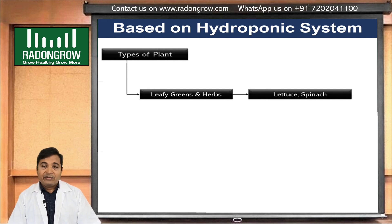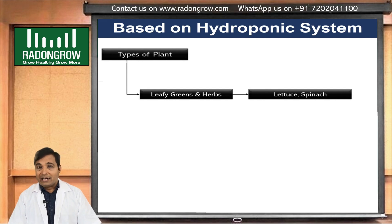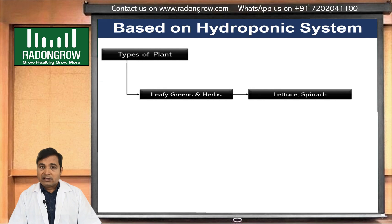We will discuss which kind of system is suitable for leafy greens and which is not. Basically, NFT (Nutrient Film Technique), DFT (Deep Flow Technique), vertical aeroponic systems, and Deep Water Culture are all suitable methods to grow leafy greens.